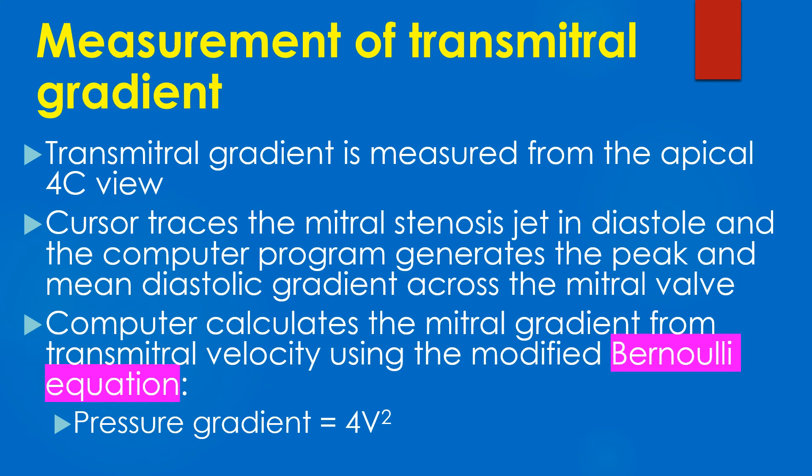Transmitral gradient is measured from the apical four-chamber view. The cursor traces the mitral stenosis jet in diastole and the computer program generates the peak and mean diastolic gradient across the mitral valve. The computer calculates the mitral gradient from the transmitral velocity using the modified Bernoulli equation, which states that the pressure gradient equals 4V squared, where V is the velocity.